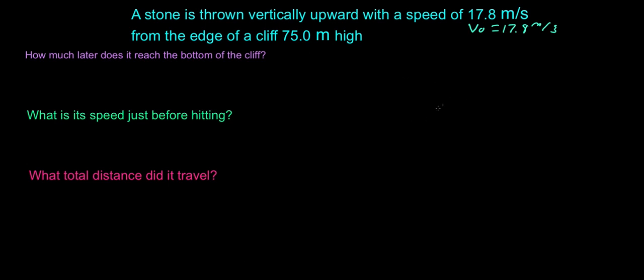So let's draw this out. We have this cliff. It is 75 meters tall, so that's delta y. I'm going to make this negative because the stone is going to be coming back down. We throw it up, it's going to arc, and then it's going to come back down.